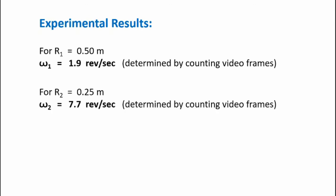Now let's take a look at the experimental results. By counting frames, I managed to determine for radius r1 equals 0.5 meters, that omega-1 was 1.9 revolutions per second. Now counting frames again for radius 2 of 0.25 meters, I came up with omega-2 of 7.7 revolutions per second. Now if I take the ratio of omega-2 over omega-1, 7.7 divided by 1.9, I come up with a ratio of 4.05. So that's very close to the theoretical prediction.